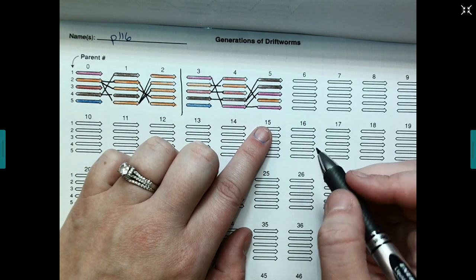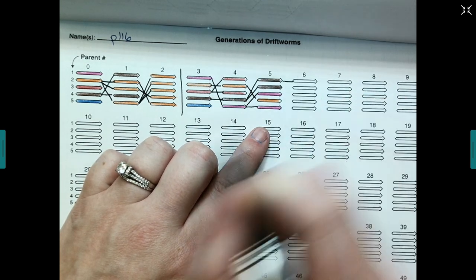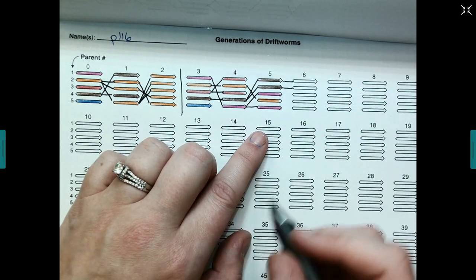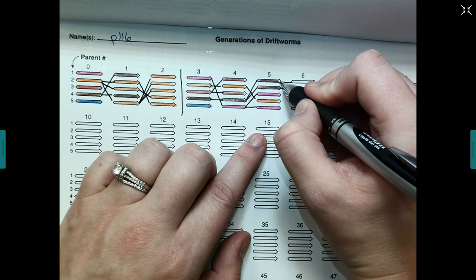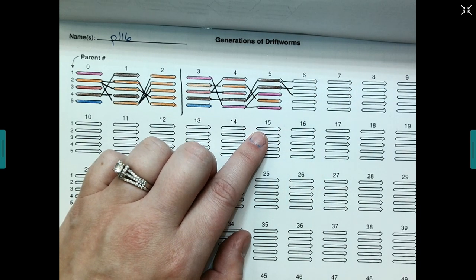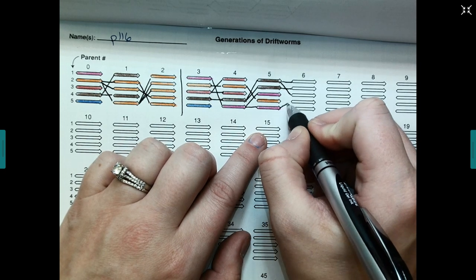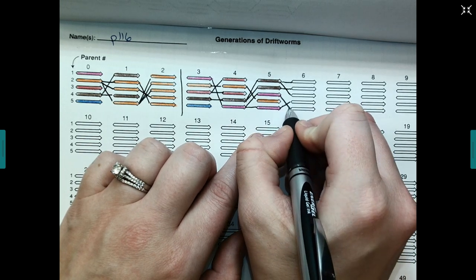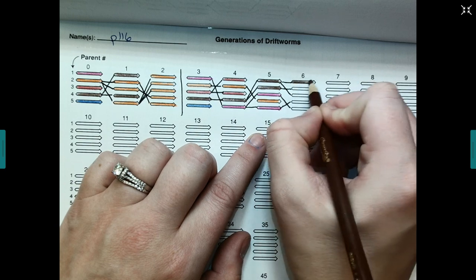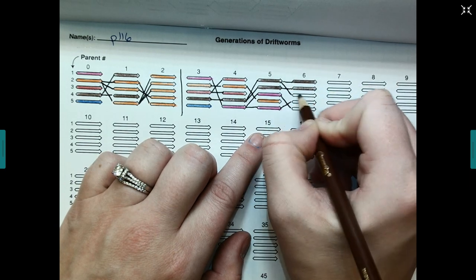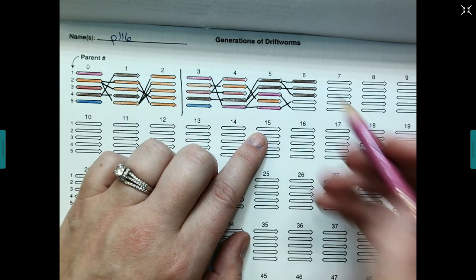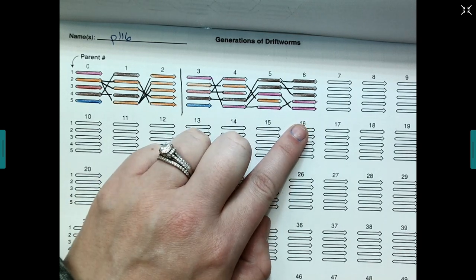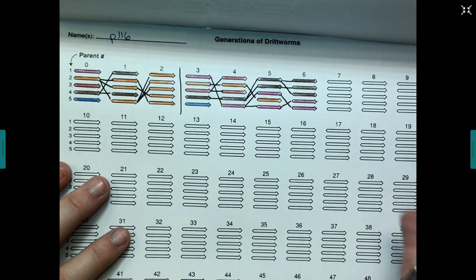So let's take a look at the next generation. I rolled a one, a two, a one again, a five, and a three. So it looks like orange is gone. So I've got brown, brown, brown, and then pink and pink. So I'm now down to two out of my five initial colors.